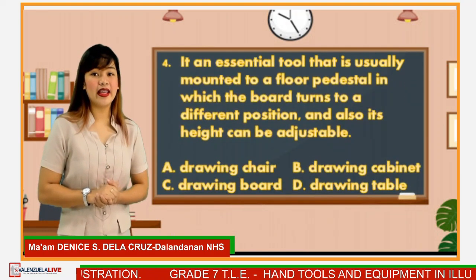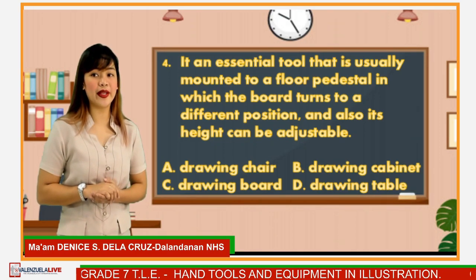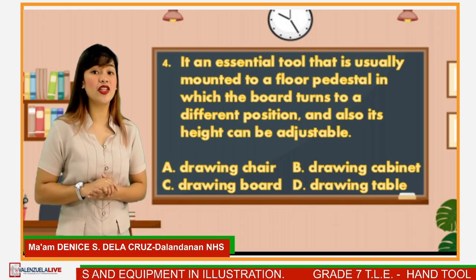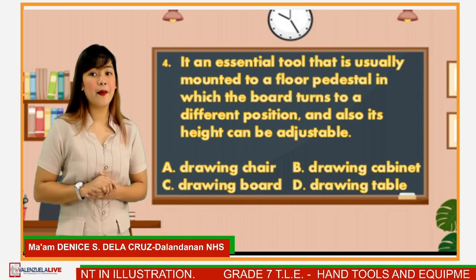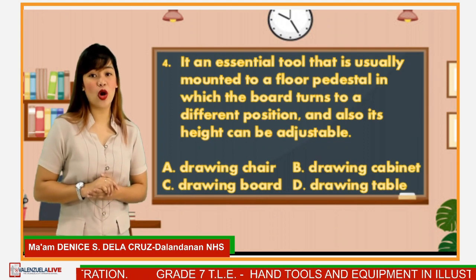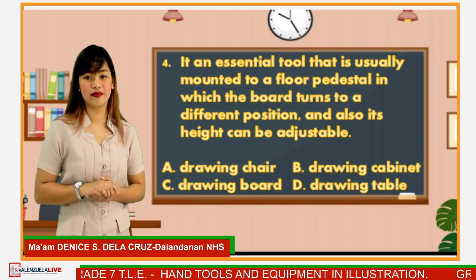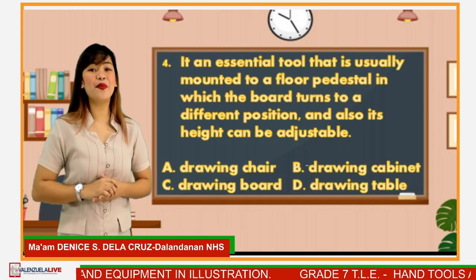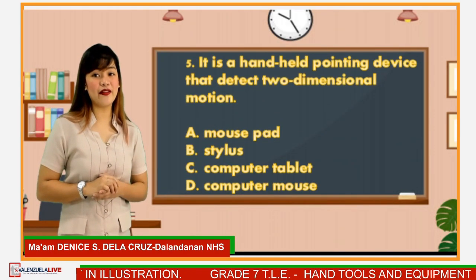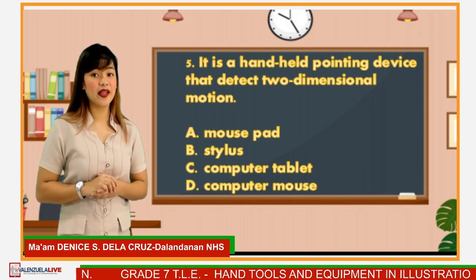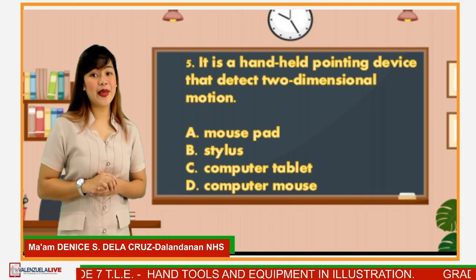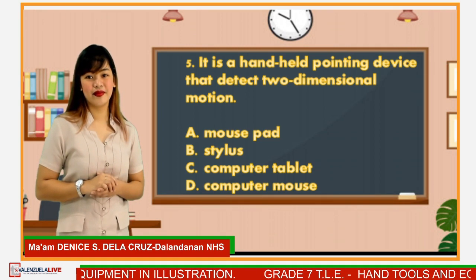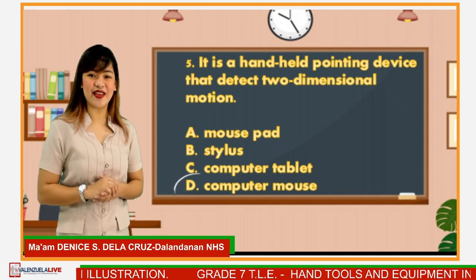Number 4: It is an essential tool usually mounted to a floor pedestal in which the board turns to a different position and its height can be adjustable. Is it A. Drawing chair, B. Drawing cabinet, C. Drawing board, or D. Drawing table? The correct answer is letter D. Number 5: It is a handheld pointing device that detects two-dimensional motion. Is it A. Mousepad, B. Stylus, C. Computer tablet, or D. Computer mouse? The correct answer is letter D. Very good again, learners!